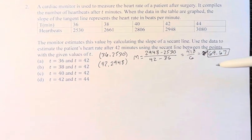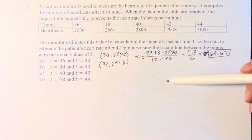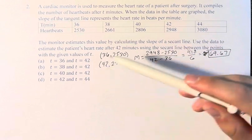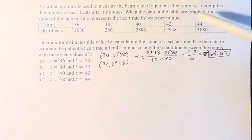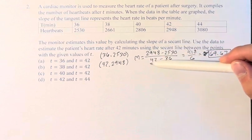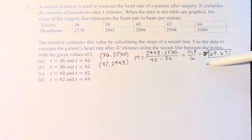This is the heart rate, the heartbeats per minute, based off of this secant line. So you take your two points, you calculate the slope between the two points, and that gives you the heart rate.